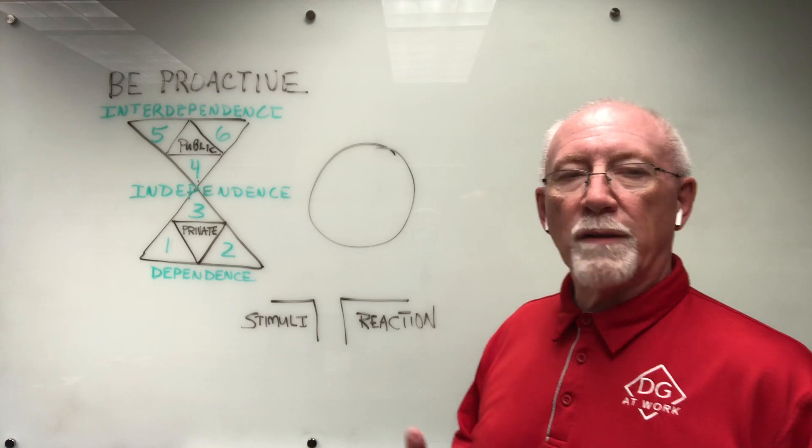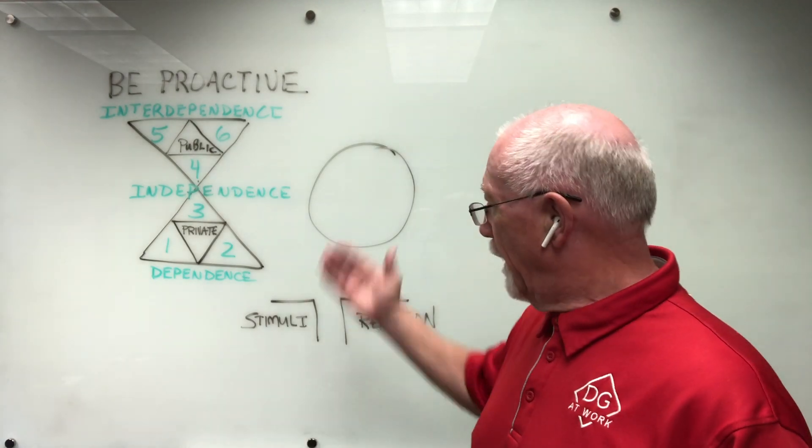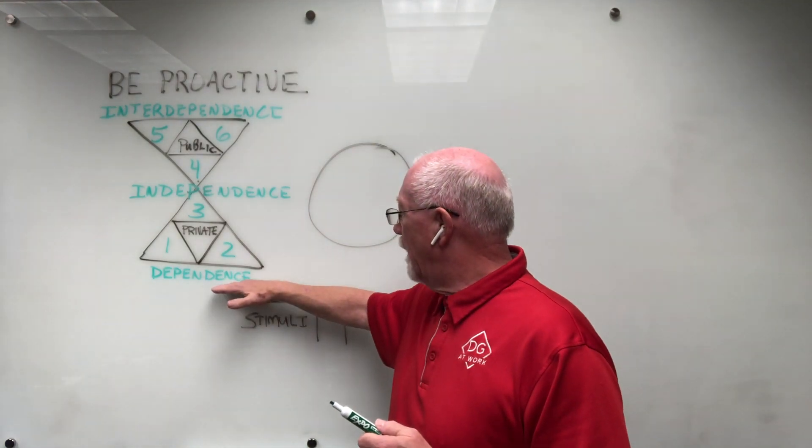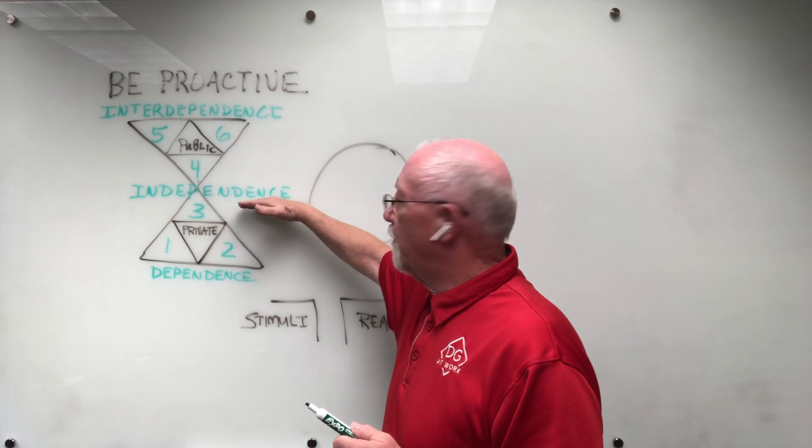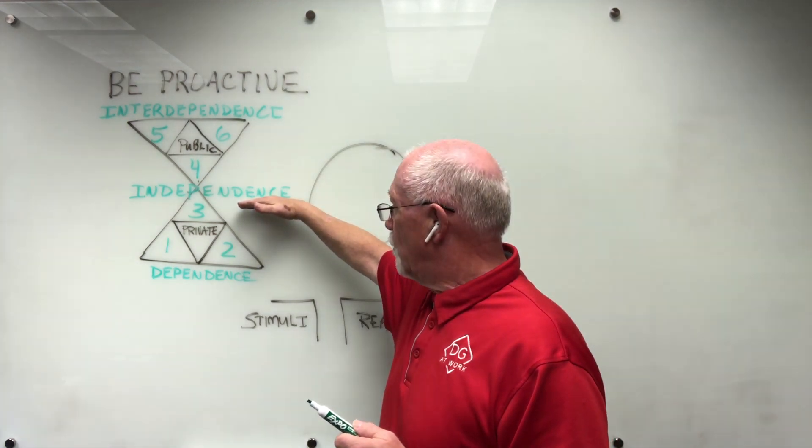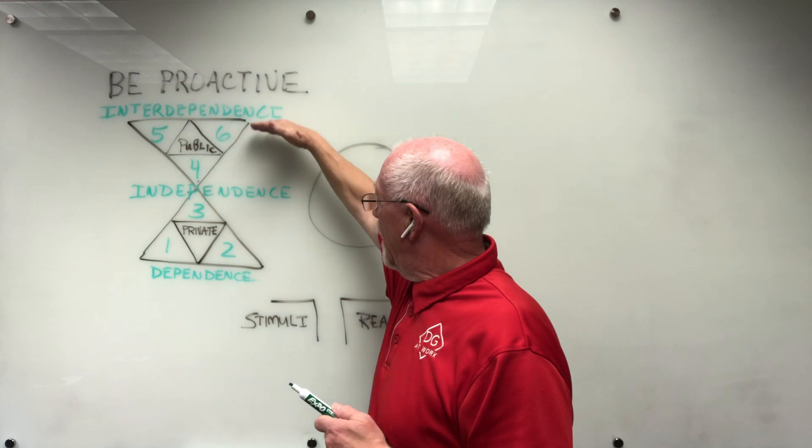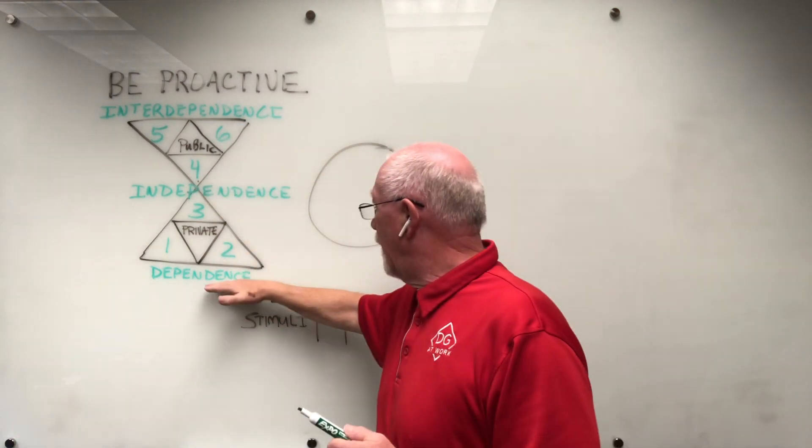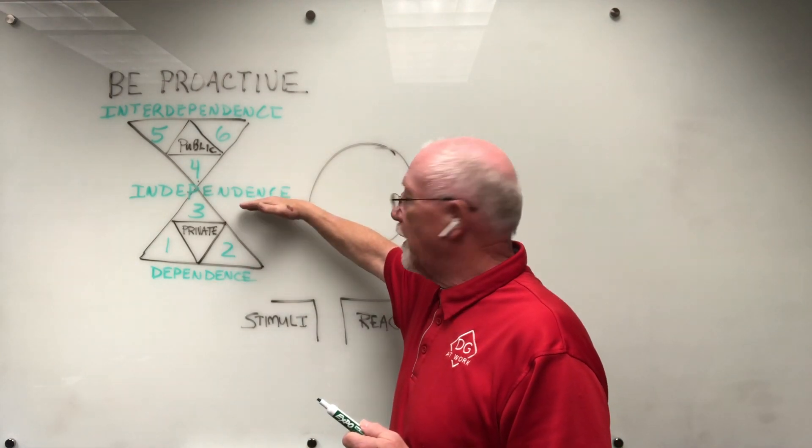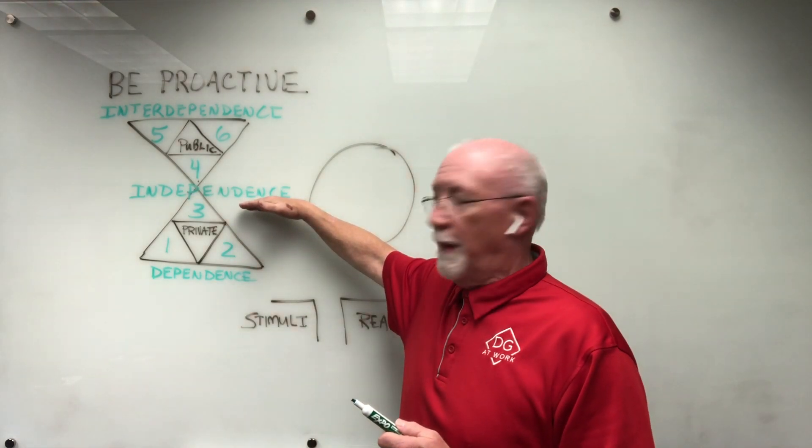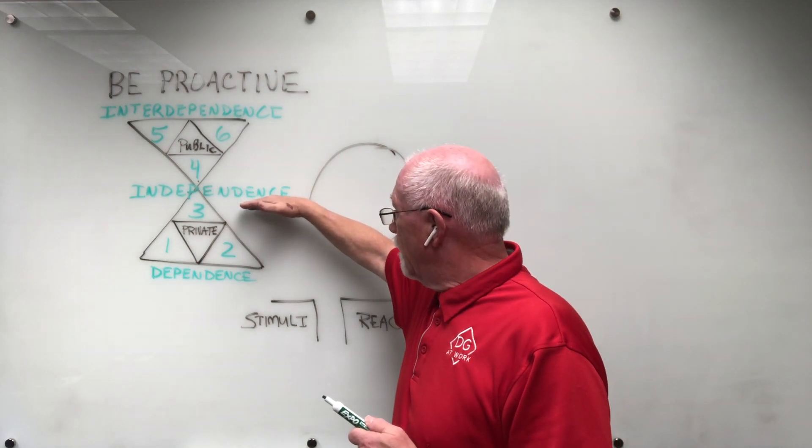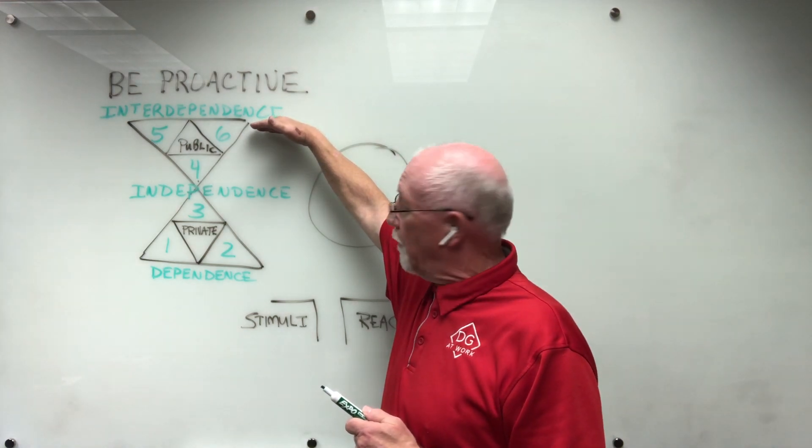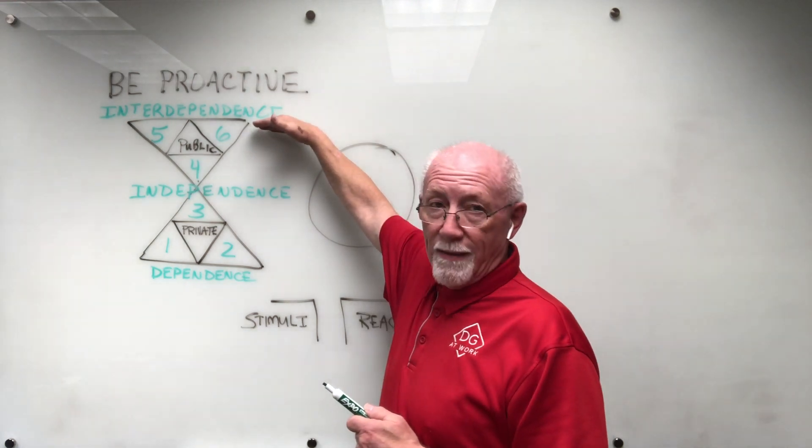Last time we talked about effectiveness and the model that Dr. Covey presents to us. We're moving from a state of dependence to a state of independence to a state of interdependence. This being the highest level, we start out being very dependent upon others, then we learn to express ourselves through our own independence. But the highest level of effectiveness is when we are working together with others—interdependence.